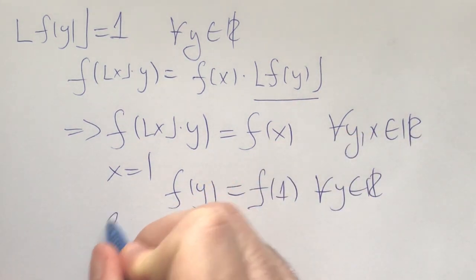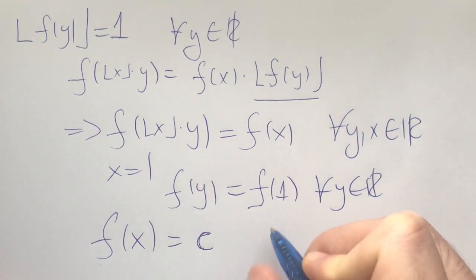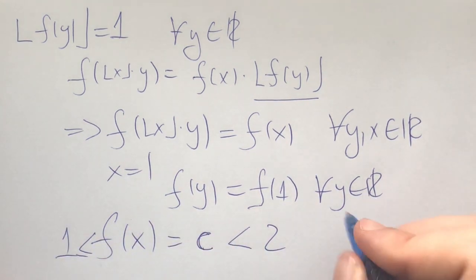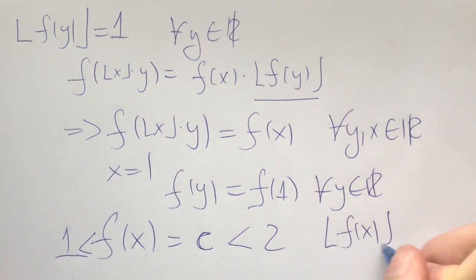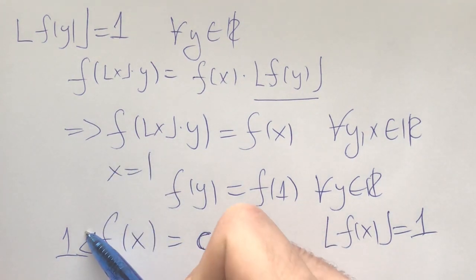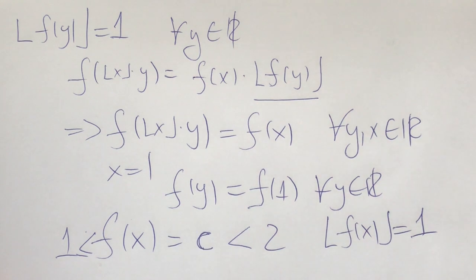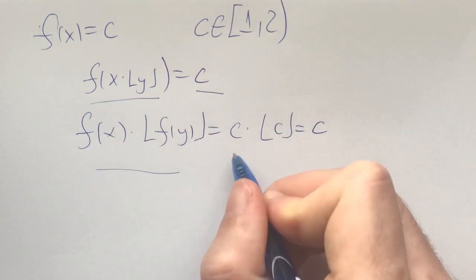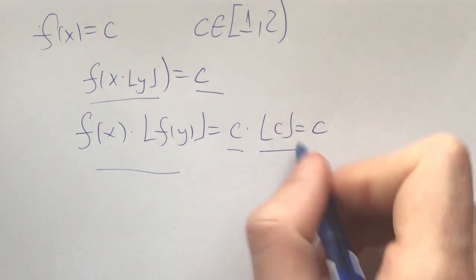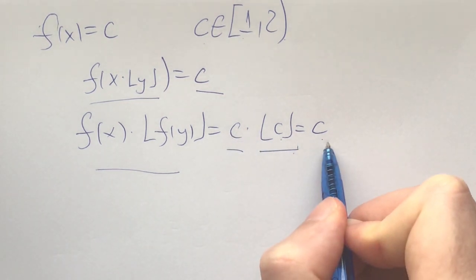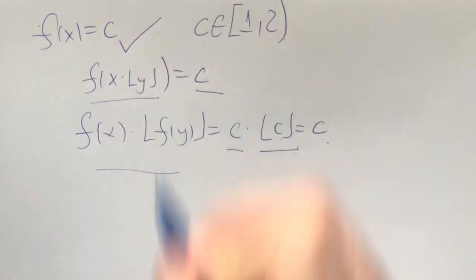In other words, f of x equals a constant c, and that constant must be between one and two, because the floor of c needs to equal one. Plugging back into the original equation, the left hand side is c and the right hand side is c times the floor of c. Since c is between one and two, the floor of c is one, so we get c times one equals c. This functional equation is a solution.